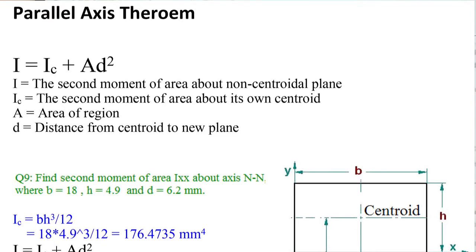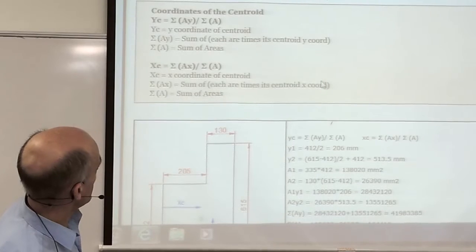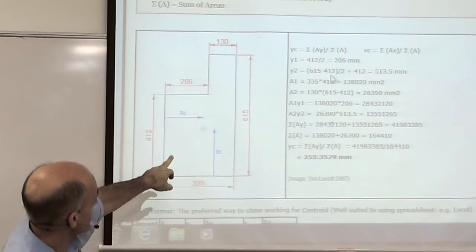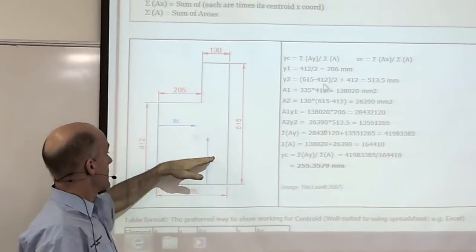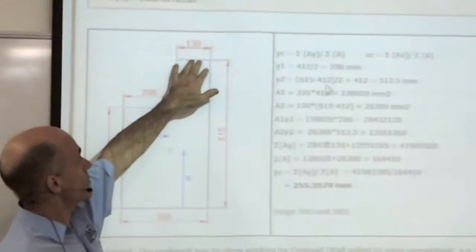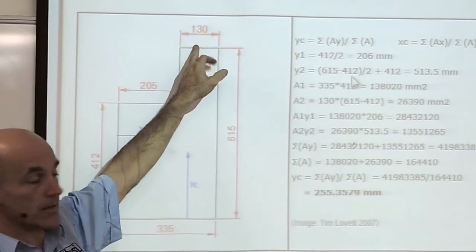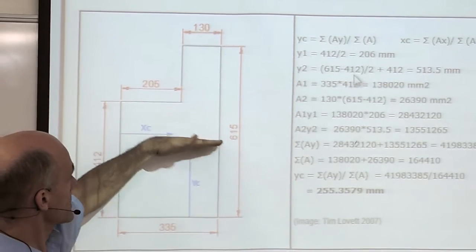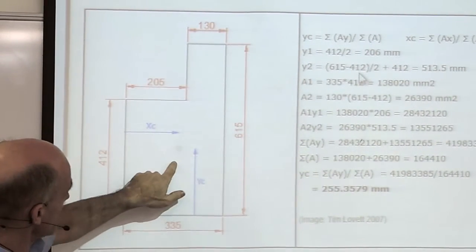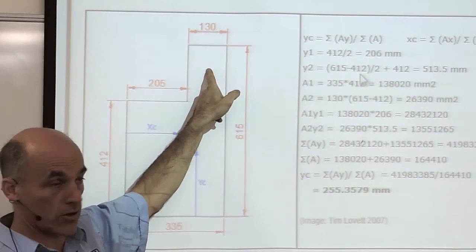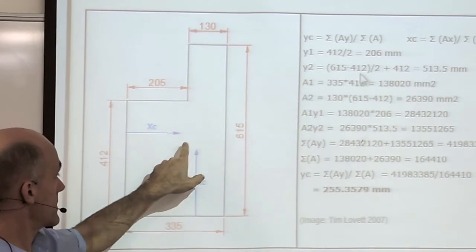Before we get into the parallel axis theorem, we have to know how to calculate the centroid. If this was a beam shaped like an L in bending, this part will be under a lot of compression at the very extreme, because the whole thing is bending around a centroid which is a little bit up. So there's the centroid of that rectangle, the centroid of that rectangle, and the centroid of the whole thing which is about there.